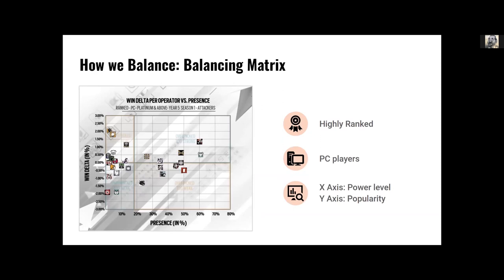So I'll give a little bit of a sneak peek of the process. This is our balancing matrix. Each season, we create one of these balancing matrices for each of our factions. So our attackers and our defenders. Here we're looking at the attacker faction from our year five season one. So this was very recently. This was actually published on our website just a couple weeks ago. When we're looking at this graph, we have on the x-axis the win delta. So this is the average win ratio when an operator is picked, minus the average win ratio when an operator is not picked. We often refer to this as the power level. Along the y-axis you'll see the presence. So this is the pick rate of an operator when not banned. We refer to this as the popularity. When we're looking at all of the little icons in this graph, those are the operator icons. So these are all individual operators on the attack side of things.